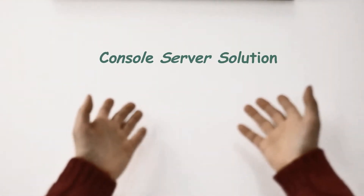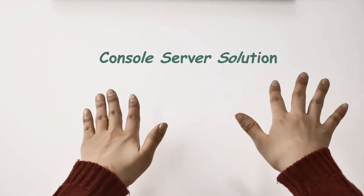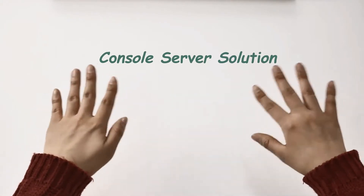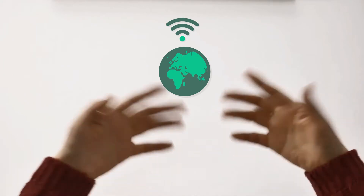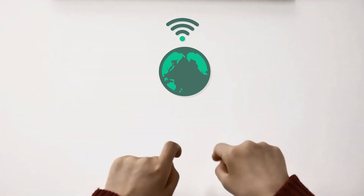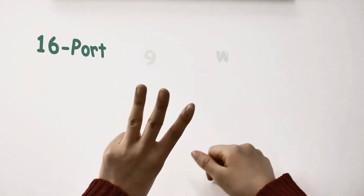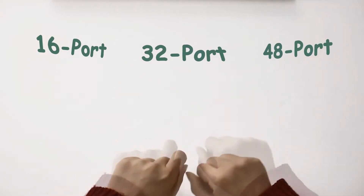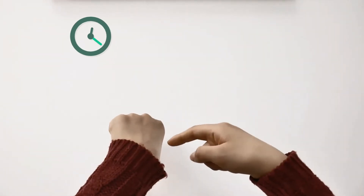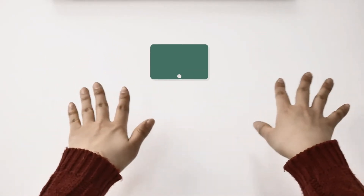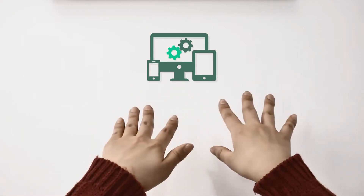SolaSystems provides console server solutions for you to easily monitor the status of your console ports over the network from anywhere you are — Germany, Korea, Canada — anywhere. We provide three different types of console servers with 16 ports, 32 ports, and 48 ports to help you save time and energy by improving efficiency of integrated management and control of many devices in diverse applications.